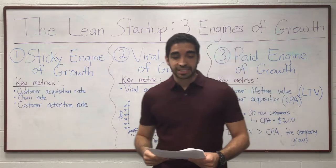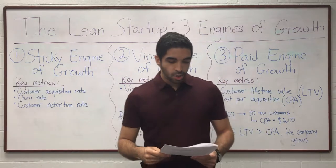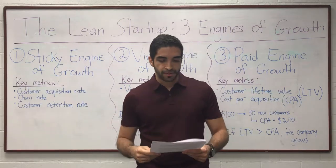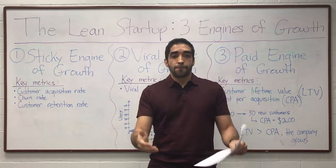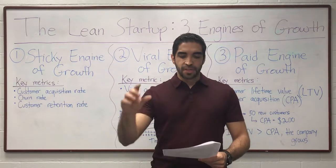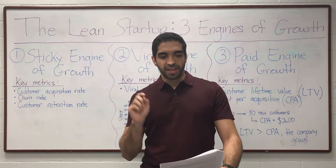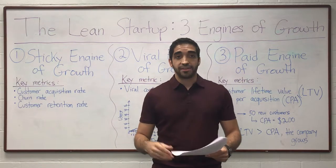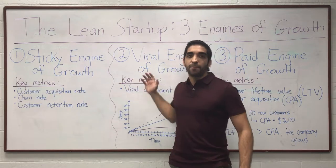A great example of a company that used the viral engine of growth was Hotmail. When the founders started, they couldn't afford an expensive marketing campaign, so instead they built a feature into the product — making marketing part of the product itself, using engineering to do their marketing. At the bottom of every email their users sent, they added the sentence 'PS get your free email at Hotmail' along with a clickable link. This was so effective that 18 months after launching, they already had 12 million subscribers.